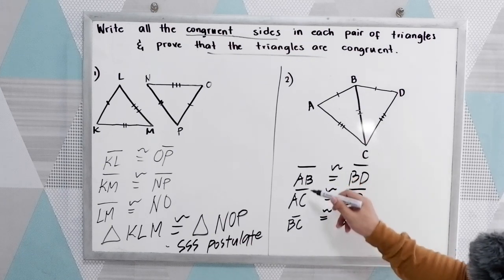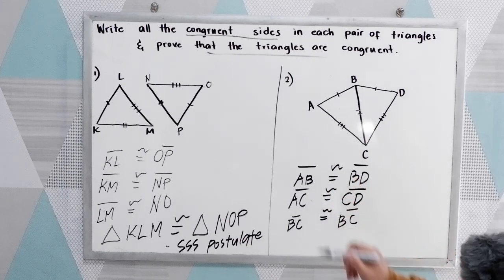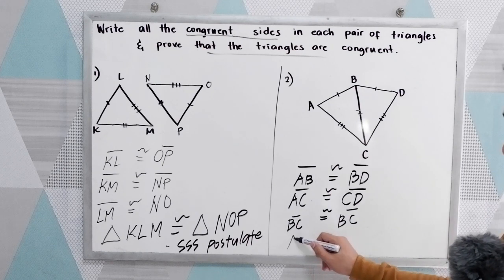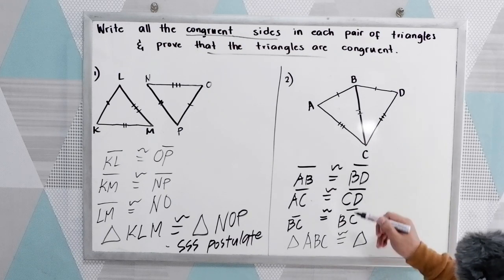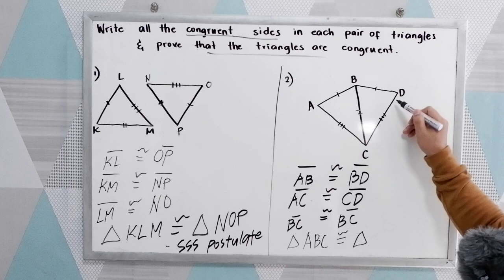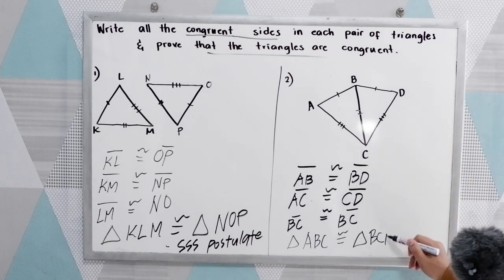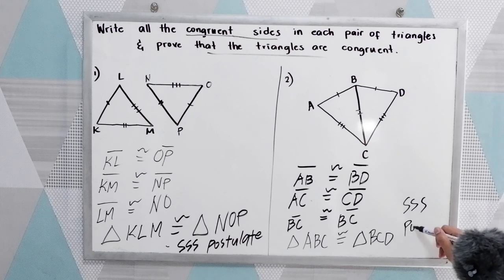Now, we have three sides. First side, second side, and third side. We can now conclude that triangle ABC is congruent to triangle BCD by SSS postulate.